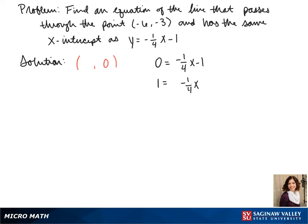Now we have -1/4x. We're going to multiply both sides by 4. That gives us 4 = -x. And when we divide both sides by negative, we get x = -4.